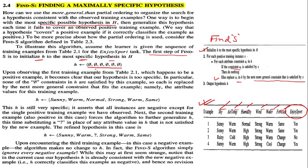Because we have six attributes, everything has been initialized to phi (∅), which is the most specific possible hypothesis — this is our initial starting point. We assign h with all phi values for the six independent attributes. Upon observing the first training example from Table 2.1, which happens to be a positive example.